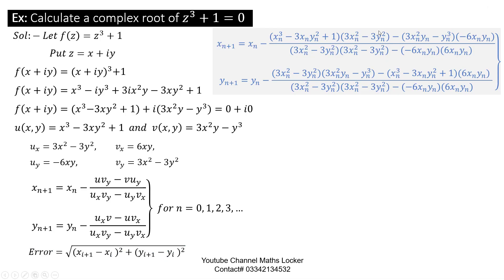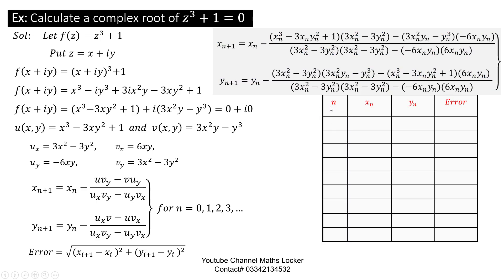Substituting values u_x, v_x, u_y, v_y, u, and v into the formula, we get the expanded form. Form a table. For the first iteration, guess the initial values — you cannot take 0. Take a value to the left or right side. We are taking x_n = 0.25. You can take 0.1 or 0.01 as you wish.